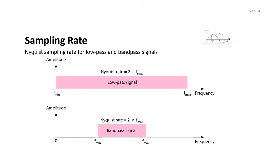In order to do sampling, you need to consider one of the important parameters, which is the sampling rate or frequency. From the Nyquist theorem, in order to reproduce the original analog signal, it is necessary to have the sampling rate be at least twice the highest frequency in the original signal. As you can see in this figure, we have two types of signals: a low-pass signal and a band-pass signal, and both signals are band-limited. This kind of signal can be sampled. However, if you have a signal with infinite bandwidth, then we cannot sample it. We can only sample a signal if it is band-limited. The sampling rate must be at least twice the highest frequency — not the bandwidth.